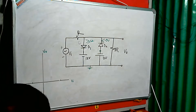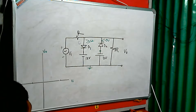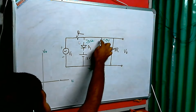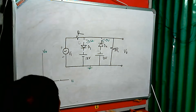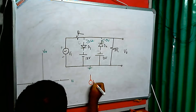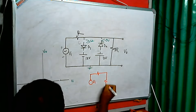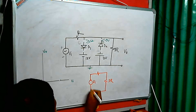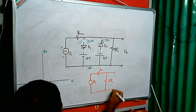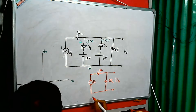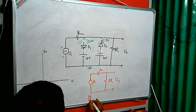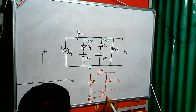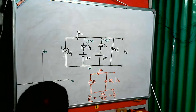Let us initially assume both diode D1 and D2 are off, so we can remove those connections. We are left with only a voltage source Vi, a resistor R, and another resistor of 3R. The output Vout is taken across 3R. The slope Vout divided by Vin is 3R divided by R plus 3R, which equals 3 by 4.